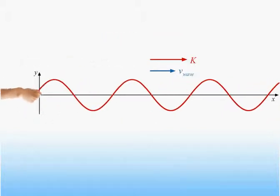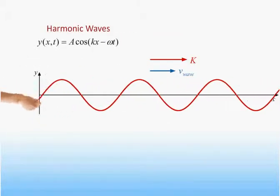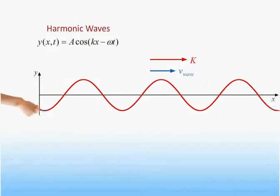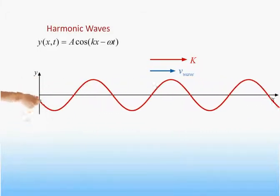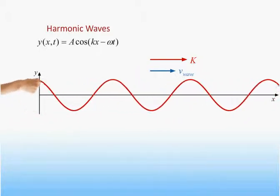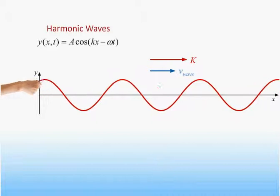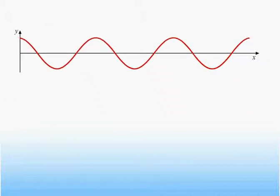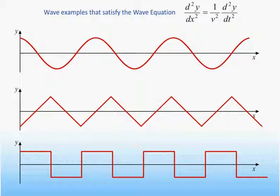So far, we have considered only harmonic waves in which the particles in the medium oscillate with simple harmonic motion, and as a result the waves themselves can be represented by a sinusoidal function of space and time. Next time, we will show that all waves are not represented by sinusoidal functions. Indeed, a function of just about any shape at all will satisfy the wave equation as long as it represents motion with a constant speed.